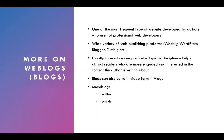Usually blogs are focused on one particular topic or discipline, so as you're thinking about the blog you're going to write for this course, think about an overarching topic you might want to focus on. This helps attract readers who are more engaged and interested in the content. For example, my personal blog is mainly inspirational or devotional — very religious in nature — and those are the people who read it. Blogs can also come in the form of video; those are called vlogs. We also have microblogs where you use just a few characters to convey a message, like Twitter or Tumblr.